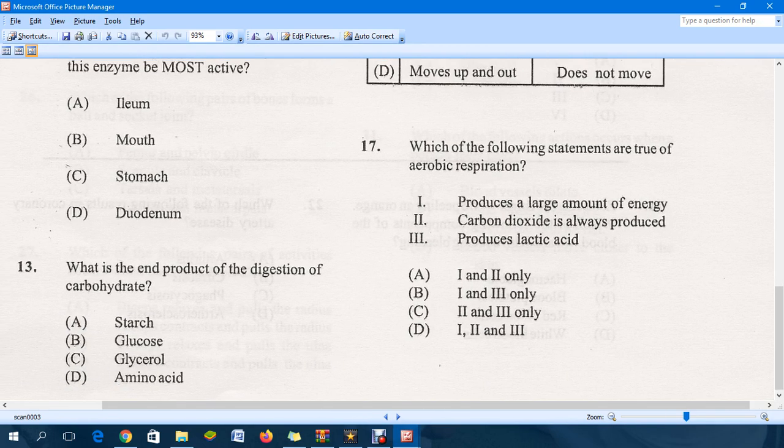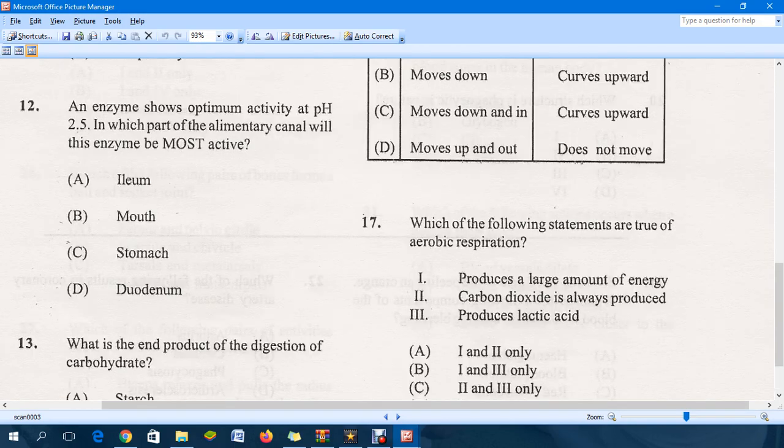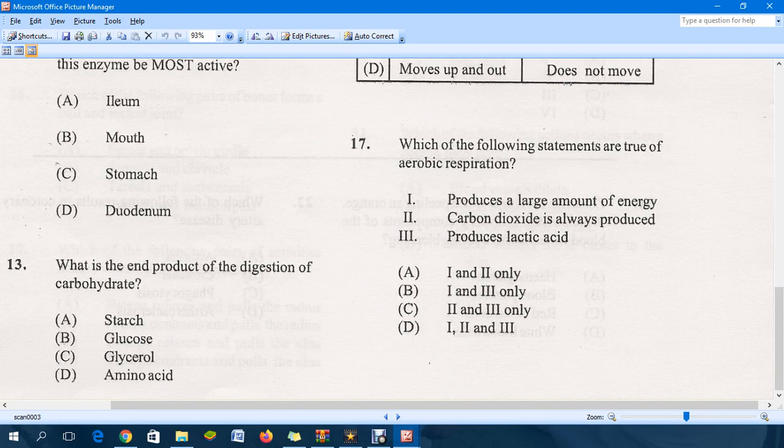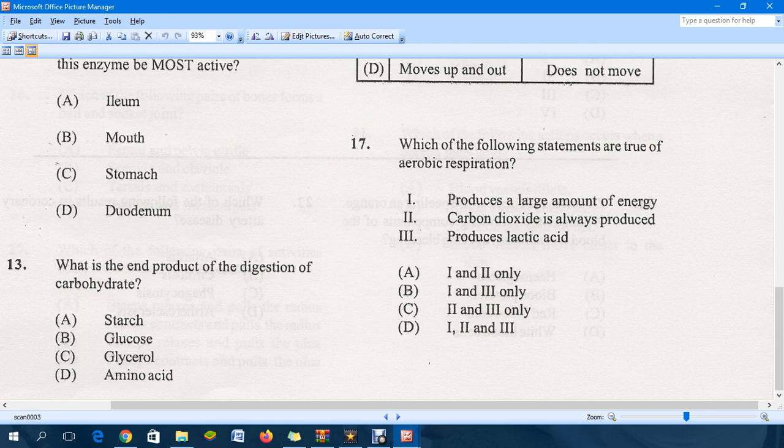Let's move down to question 13. What is the end product of the digestion of carbohydrates? The end product definitely would be B, and that is glucose. Starch is not an end product. Glycerol would be one of the end products for fat digestion, while amino acid would be the end product for protein digestion.